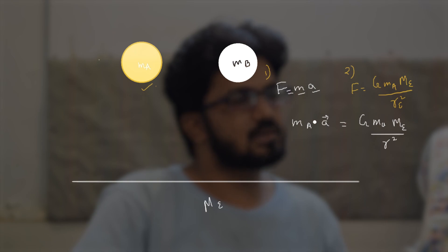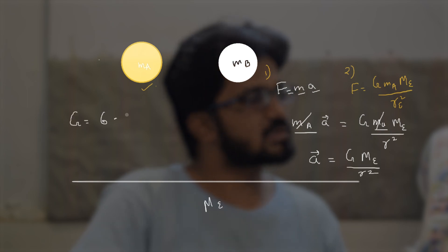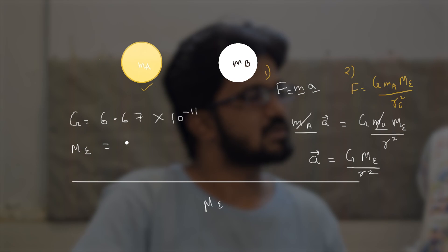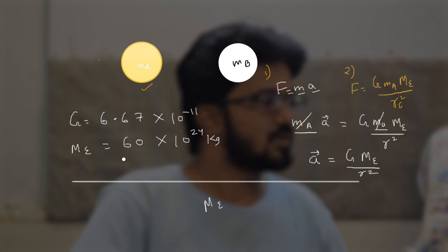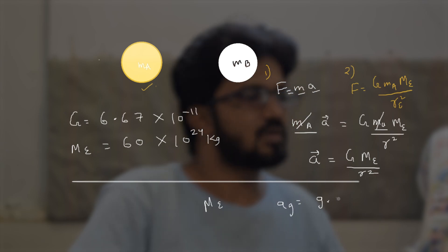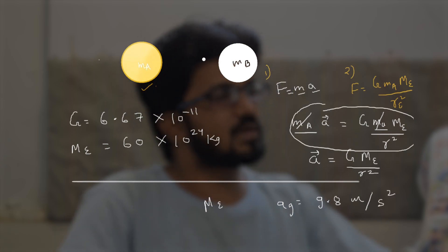We can see that the mass of the object m cancels out from both sides because they are the same, and the acceleration depends only on G × M_E divided by r squared. Here, G is 6.67 × 10⁻¹¹, and the mass of the Earth is approximately 6.0 × 10²⁴ kilograms. When we put in these values, the acceleration comes out to approximately 9.8 meters per second squared. So the entire equation is independent of the mass of the object.